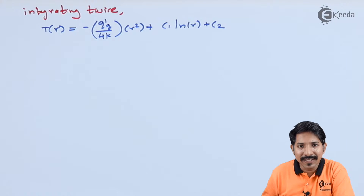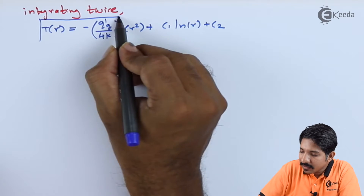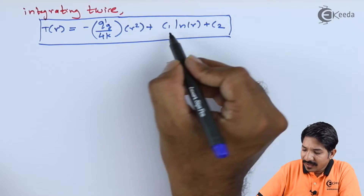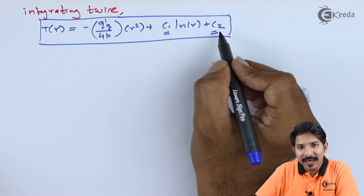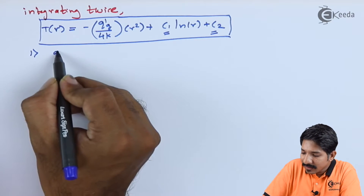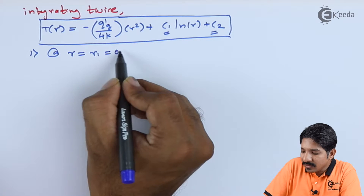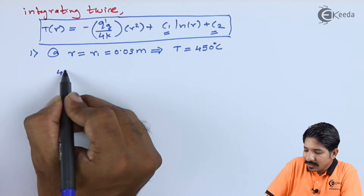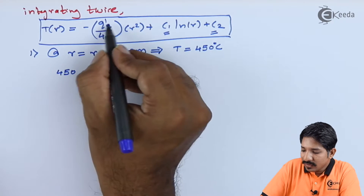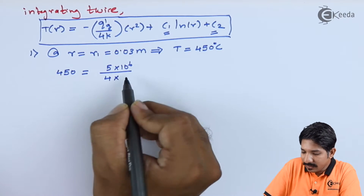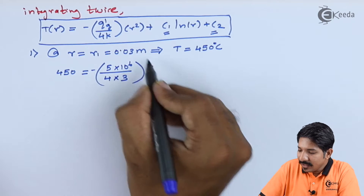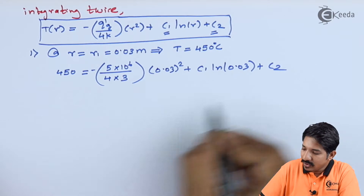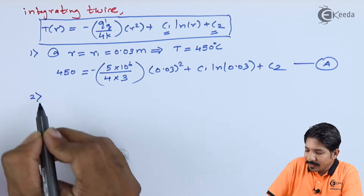Integrating the equation twice gives the solution: T(r) = −(q_g / 4k)·r² + C1·ln(r) + C2. Applying the first boundary condition — at r = r1 = 0.03 m, T = 450°C — we get: 450 = −(5×10⁶ / (4×3))·(0.03)² + C1·ln(0.03) + C2. Call this equation (A).